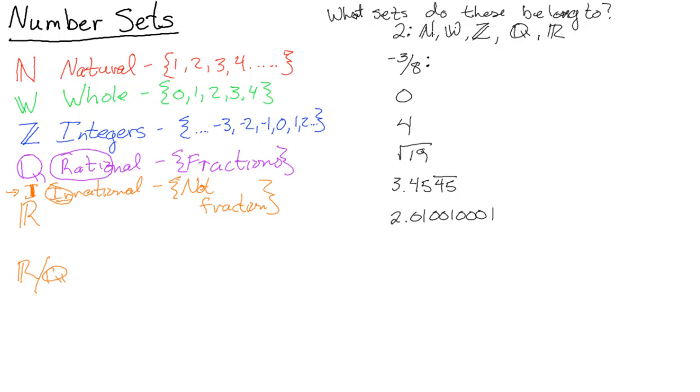Zero is not a natural number, but it is a whole number, which means it is also an integer, which means it's also rational and real. Yes, it is a ratio of two integers—zero to 5, zero to 8, zero to 10, stuff like that. Four is a natural, so it's going to follow just like number 2.